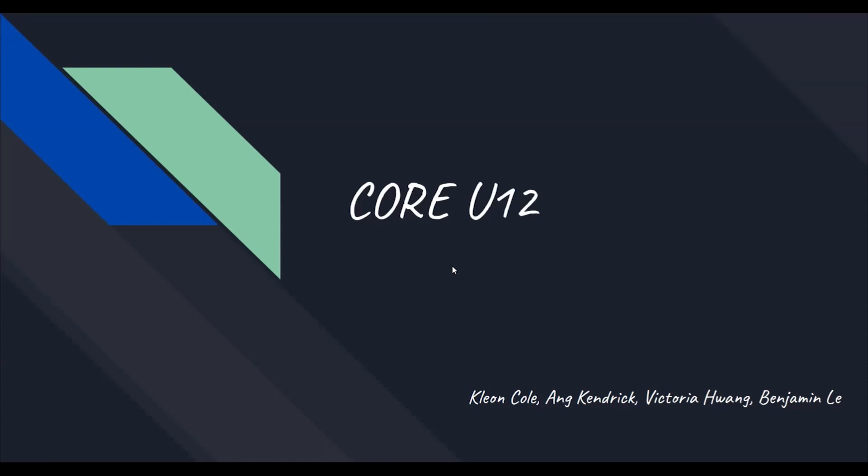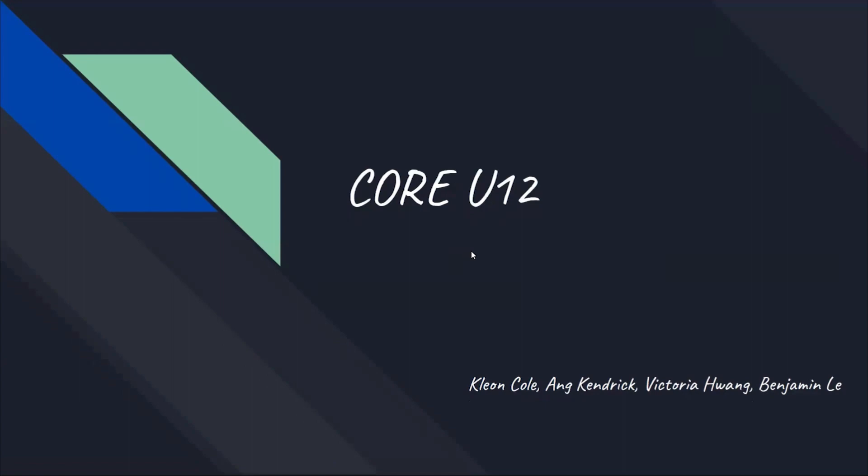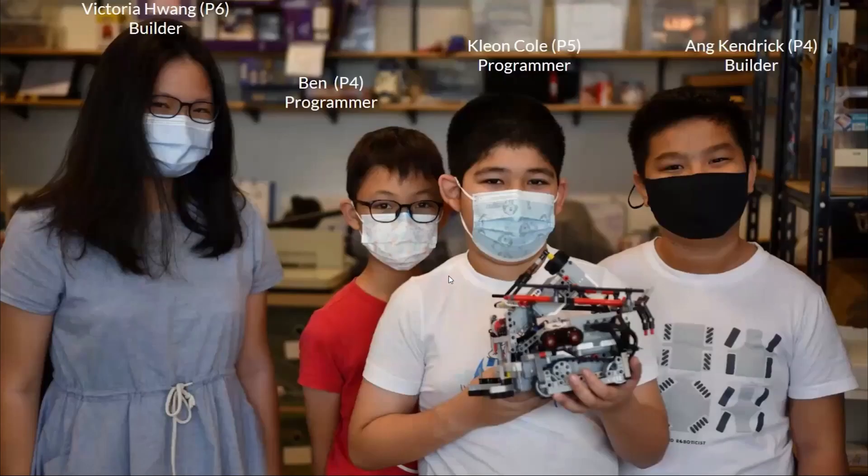We are team 4U12 and this is our presentation. Our team consists of 4 members. We have Cleon, who is primary 5 and is our programmer, Victoria, who is primary 6 and our builder, Hendrik, who is primary 6 and is our builder, and myself, Benjamin, who is primary 4 and our programmer.